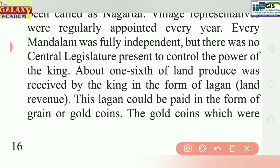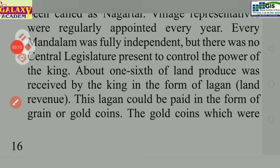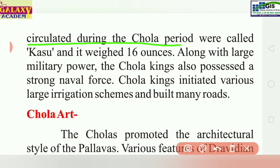About one-sixth of land produce was received by the king in the form of lagan (land tax). This lagan could be paid in two ways: either in gold coins or in the form of grain. The gold coins circulated during the Chola period were called kasu.